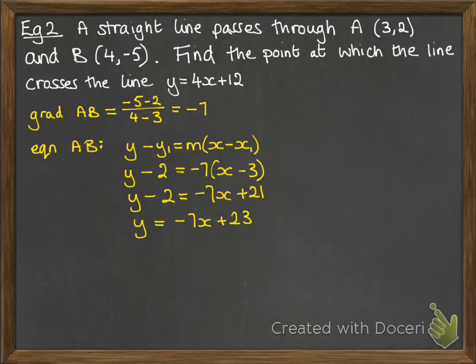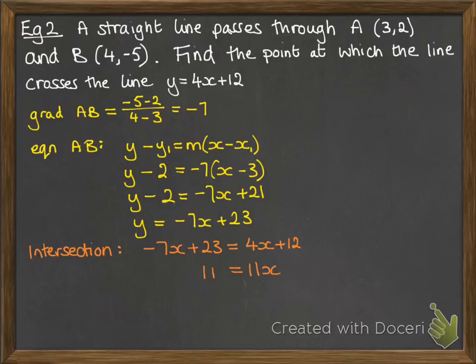At the point of intersection with the line in the question, that will be where the two equations are equal to each other. The point of intersection will happen when minus 7x plus 23 equals 4x plus 12. We need to go ahead and solve that equation.